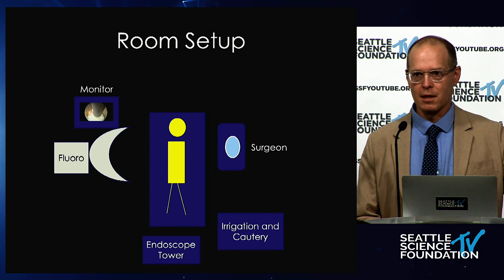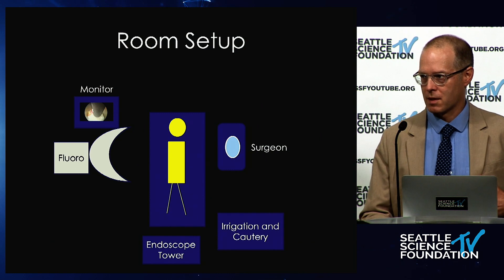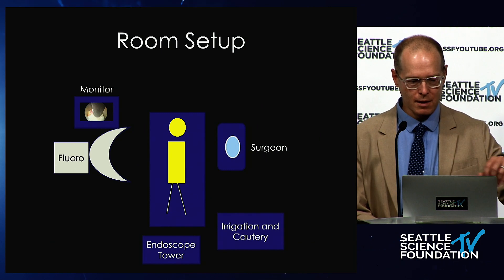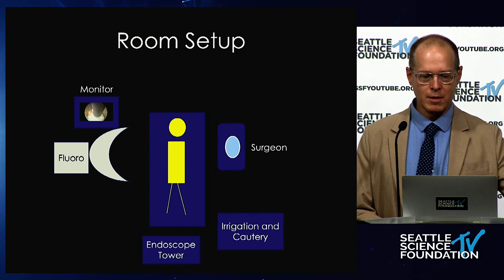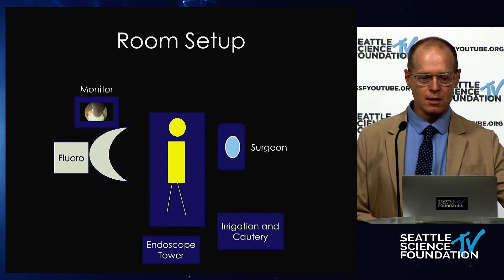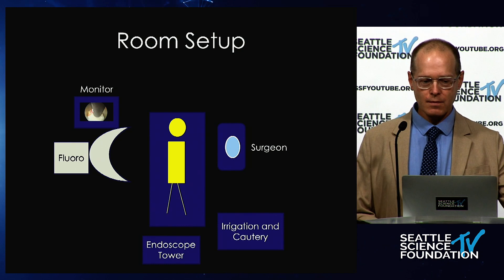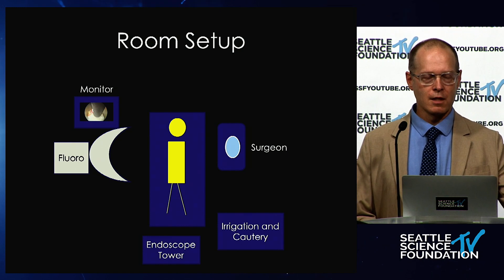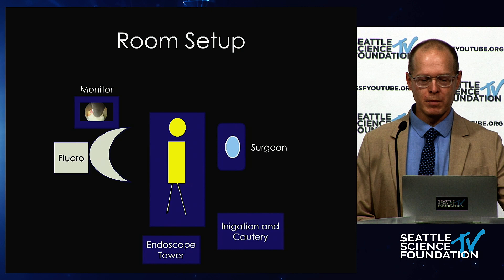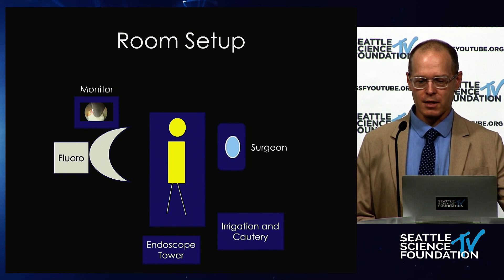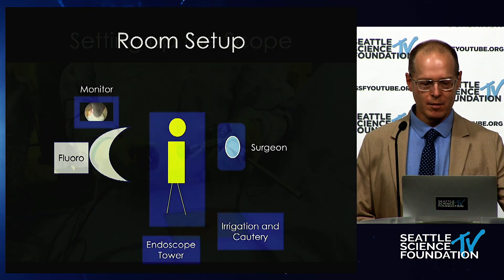Room setup will typically have fluoroscopy opposite to the surgeon. The monitor is also opposite to the surgeon so you have a nice comfortable position to operate. The endoscope tower and irrigation are typically at the feet, although that can be variable.